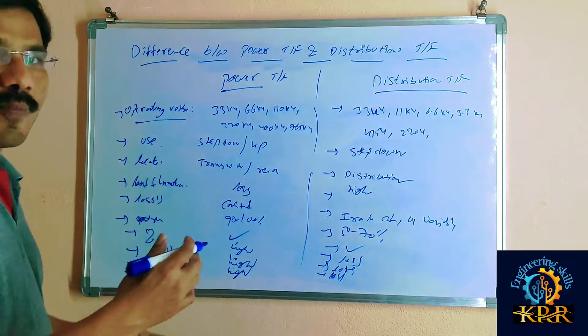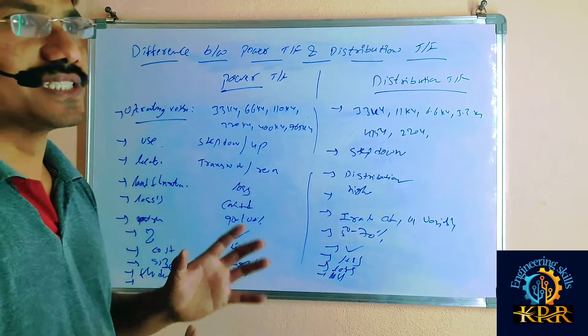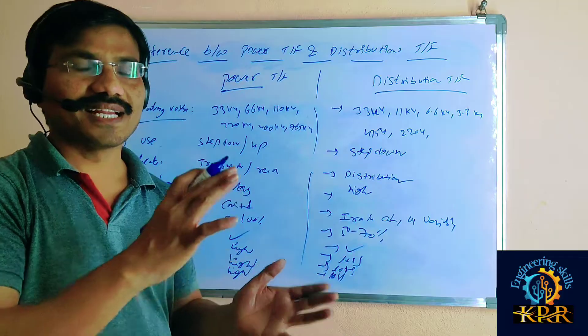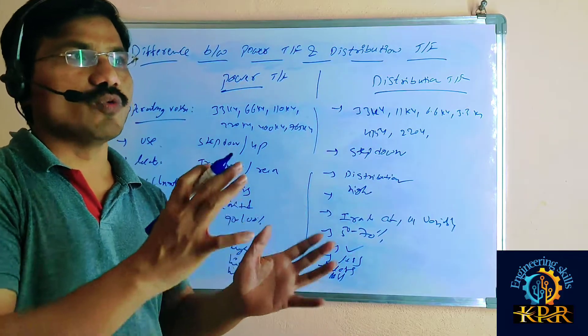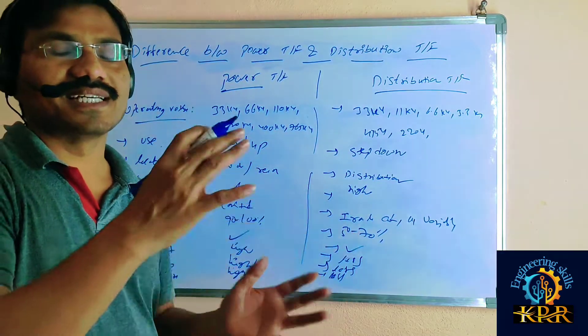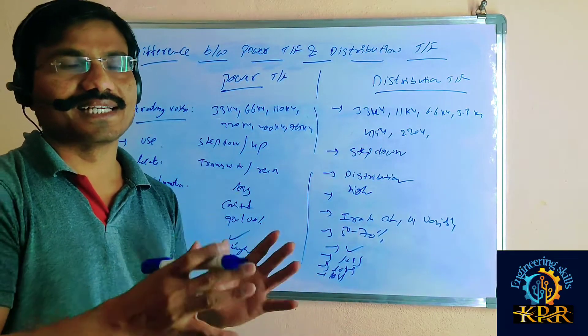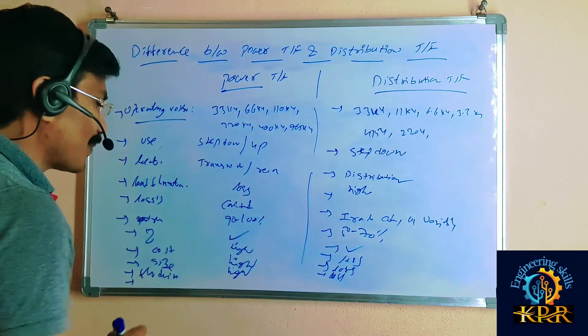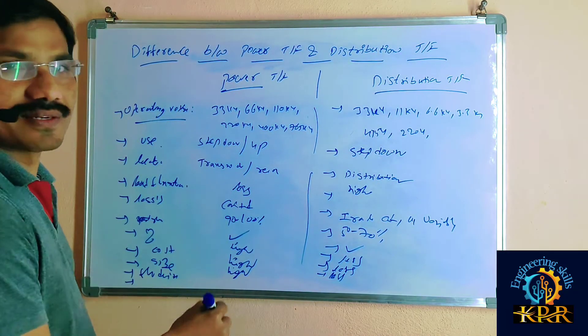If you go for the connections, in the power transformer, we look at how the primary set and secondary set are connected. Similarly, in the distribution transformer, we examine how the primary set and secondary set are connected.